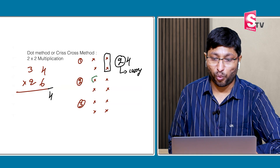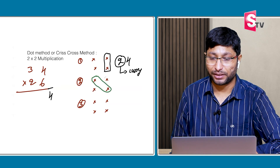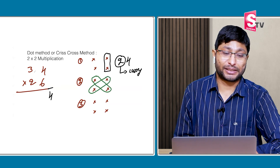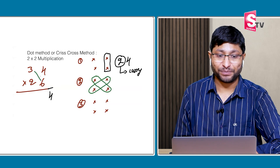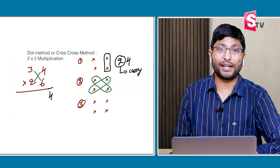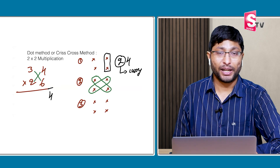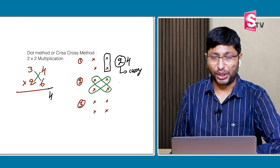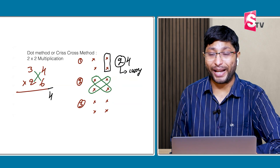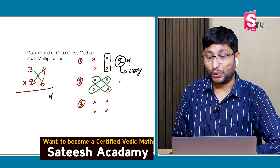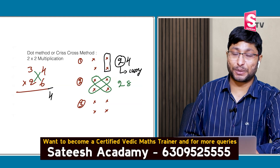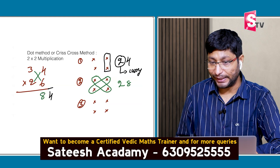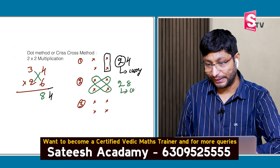Step 2: units place into tens place and tens place into units place. 6 × 3 = 18. 4 × 2 = 8. 8 plus 18 = 26. 26 plus 2 carry = 28. Write down the 8; 2 will be carry.